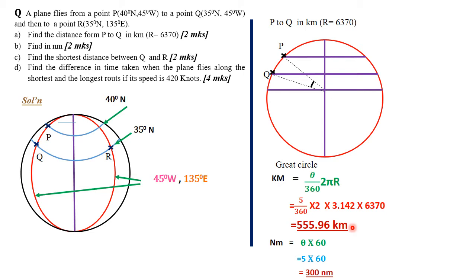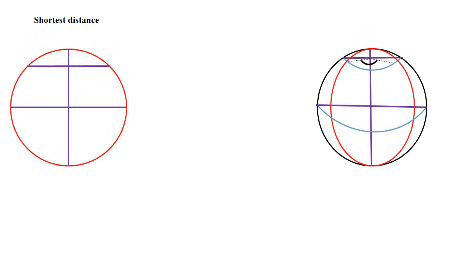Now we move to the main part of the lesson — the shortest distance between points Q and R, which lie along 35 degrees north latitude. There are two options: go up to the north pole and come down to R, or move across the latitude directly. The question is: which route is shorter? We now begin thinking about the shortest distance between these two points using both models.